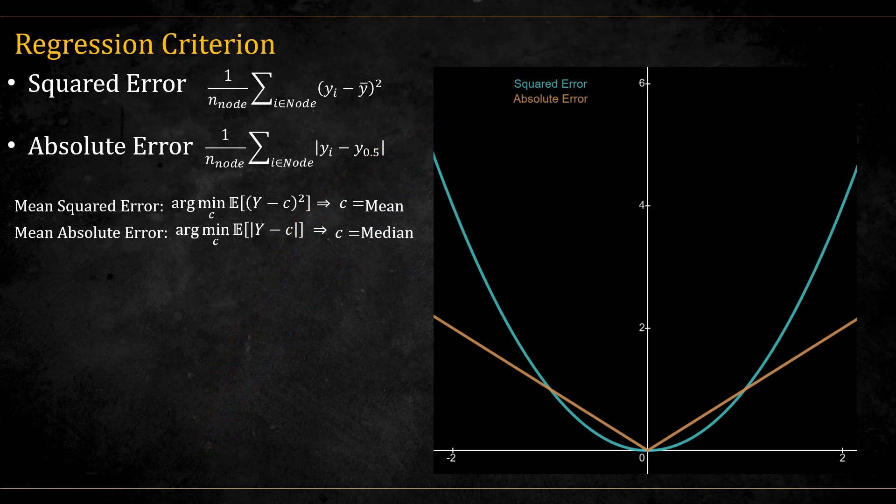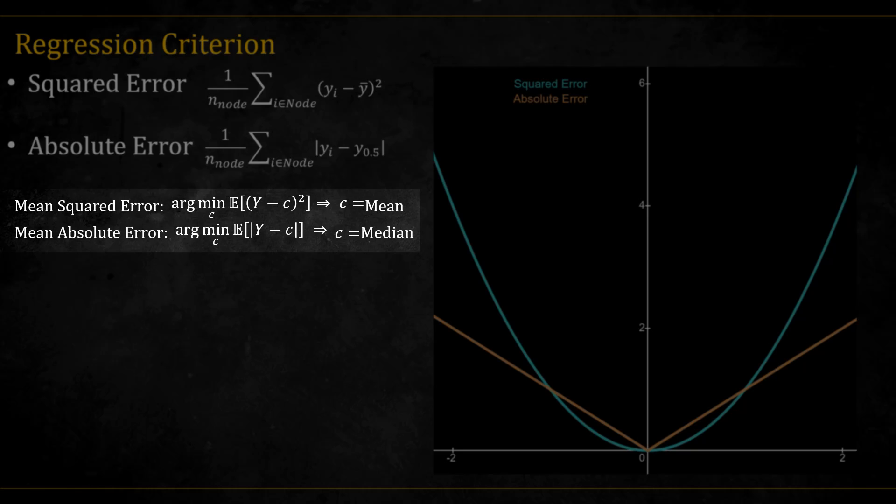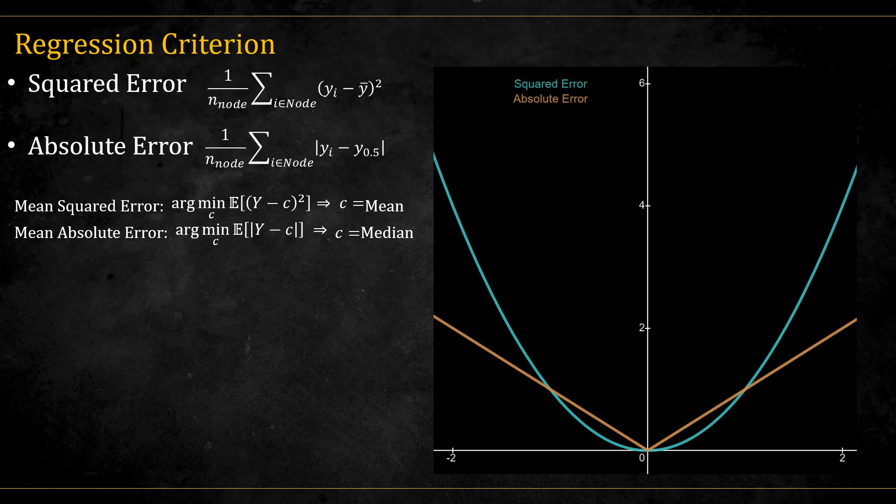Let's move on to regression. The two main criteria used here are the squared error or the L2 error and the absolute or L1 error. Both are measures of the overall dispersion in the data. But different loss functions give rise to different optimums. The value that minimizes the squared error is the mean and the value that minimizes the absolute error is the median. As such, if we choose to use the squared error, we should set every terminal node to the median.